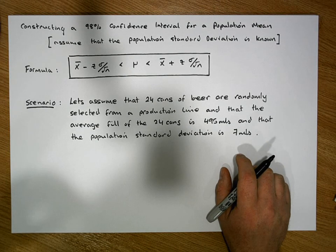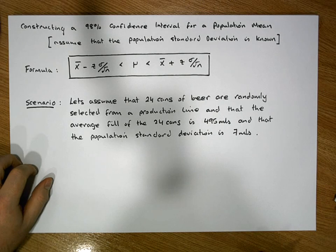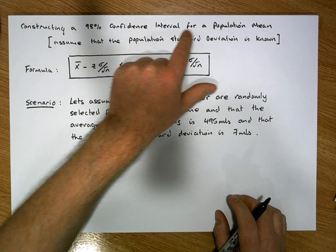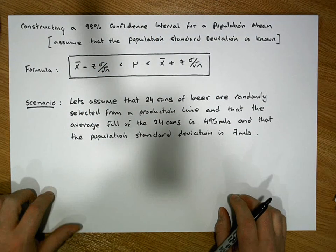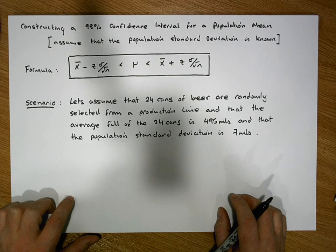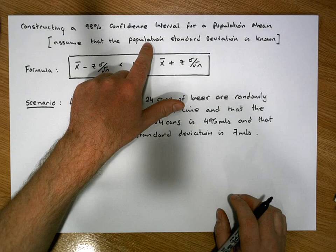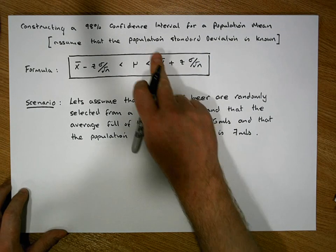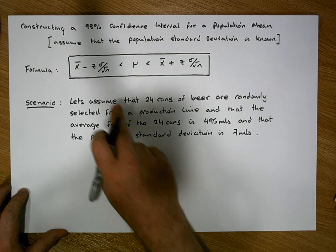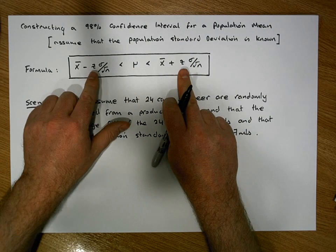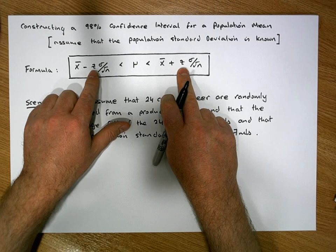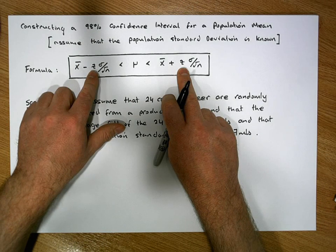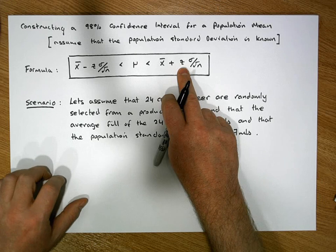Hi guys, this is Jonathan Lambert with the Mathematics Development and Support Service at the National College of Ireland. This short video is going to detail how to construct a 98% confidence interval for a population mean. Associated with this construction, we're going to assume that the population standard deviation is known and given in advance. When the population standard deviation is known, the interval is constructed based on a standard normal distribution, and we calculate particular z-scores associated with this 98% confidence interval.